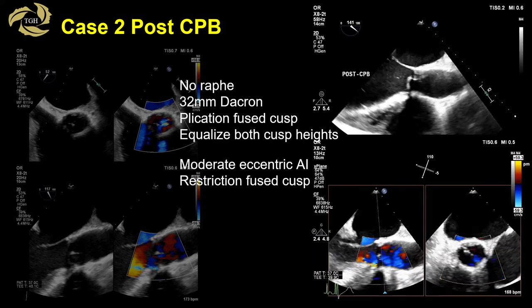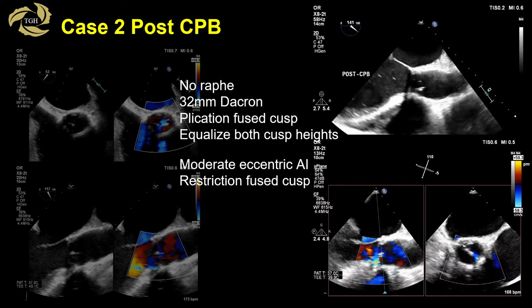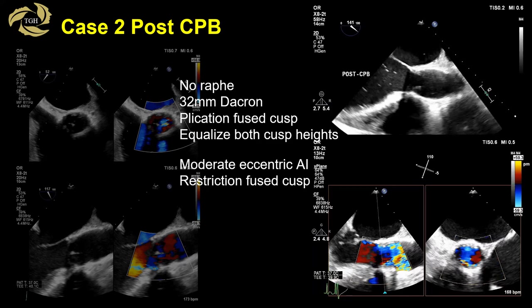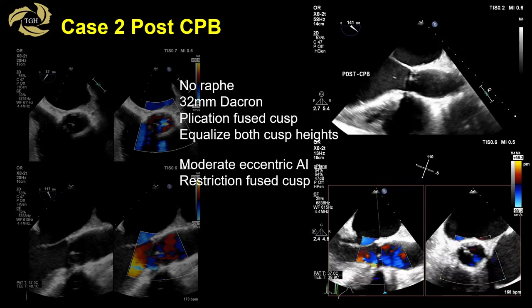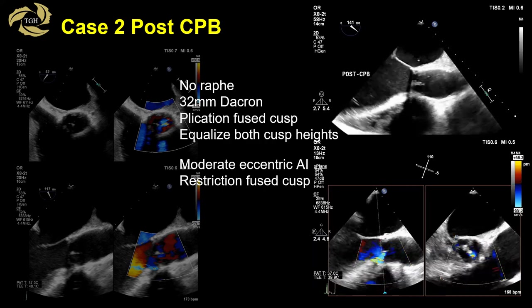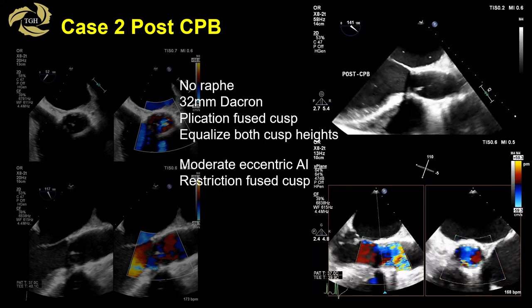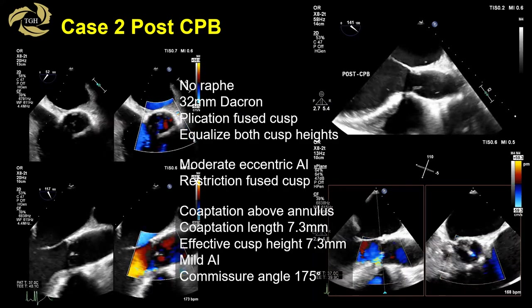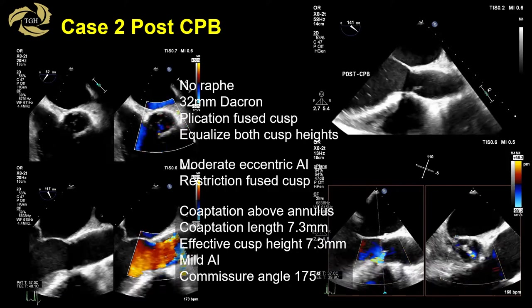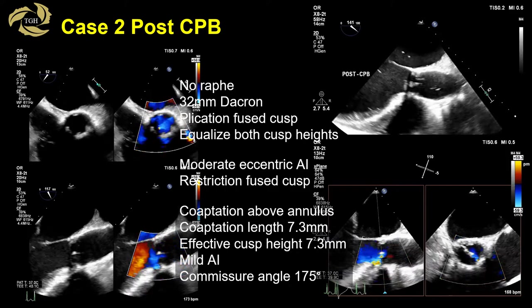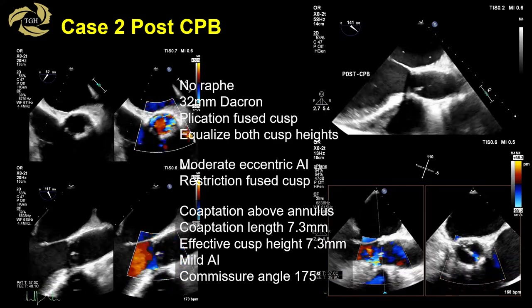The surgeon went ahead and spared the valve, implanting a 32 millimeter Dacron graft, plicating the fused cusps, and equalizing both cusp heights. Initial results showed moderate eccentric anteriorly directed AI due to retraction of the fused cusp, so the surgeon went back on pump to revise the repair. The final echo shows coaptation above the annulus with a coaptation length of 7.3 millimeters, commissural angle close to 180 degrees, and mild AI.